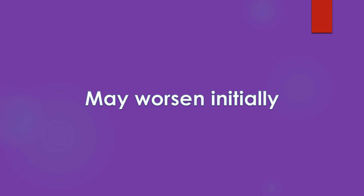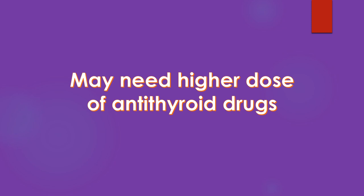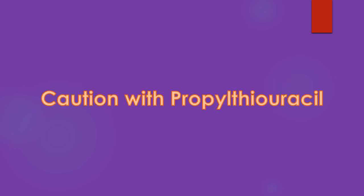Very often the clinical condition may not permit withdrawal of amiodarone as it is often used for life-threatening cardiac arrhythmias. If withdrawal of amiodarone is not an option, treatment with thioamide drugs like carbimazole, methimazole, or propylthiouracil may be needed. Higher doses of these drugs may be needed due to the high iodine levels in the body. Though propylthiouracil was initially preferred as it reduces peripheral deiodinase activity, a safety warning has been issued due to its potential liver toxicity.